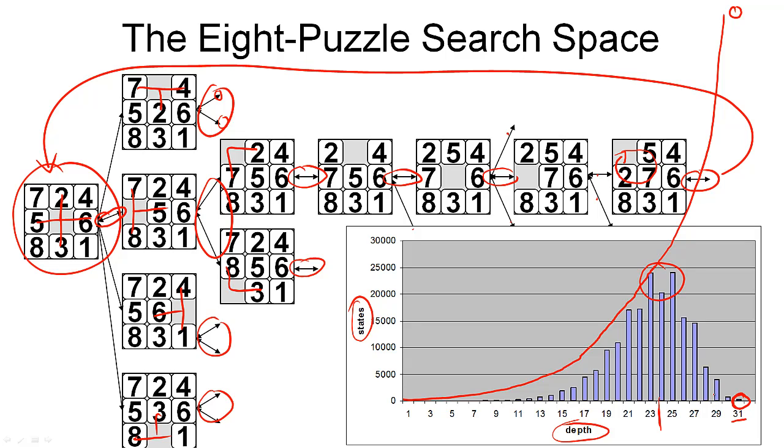But graph search also has some additional cost. We need to maintain that hash table, as we've seen. And comparing states in a hash table, depending on the complexity of these states, this can take up quite some time too. There's a basic trade-off here.